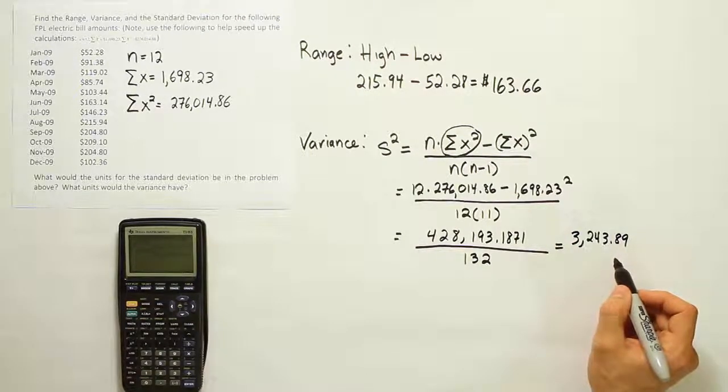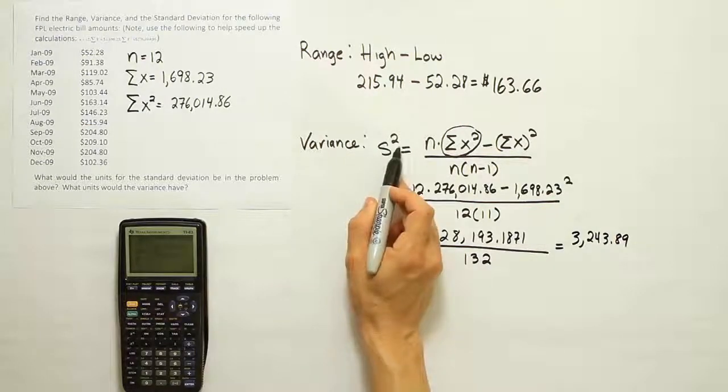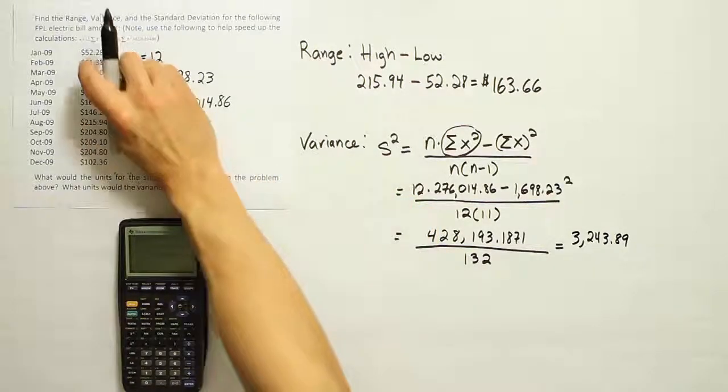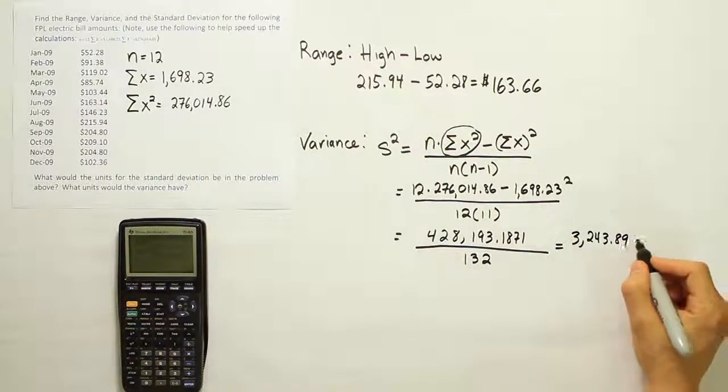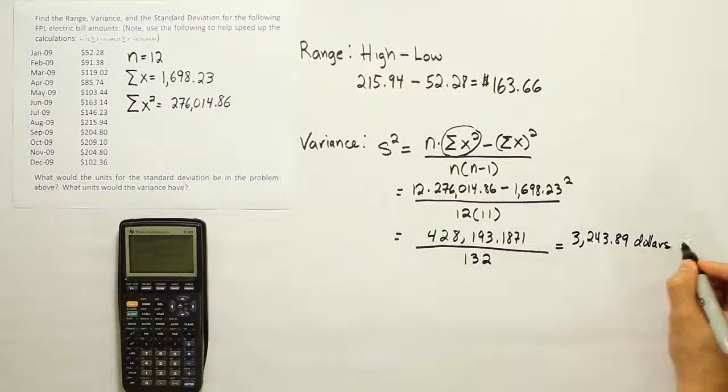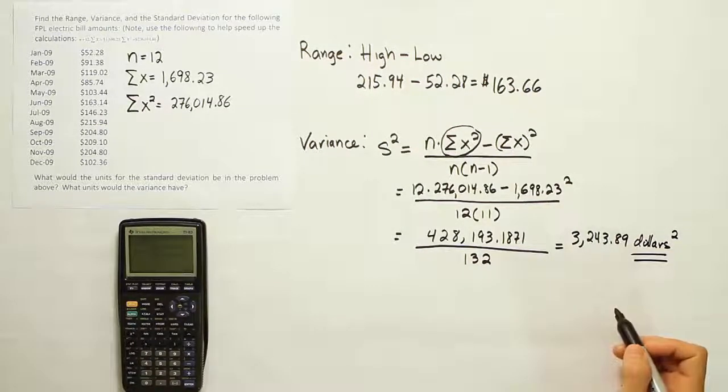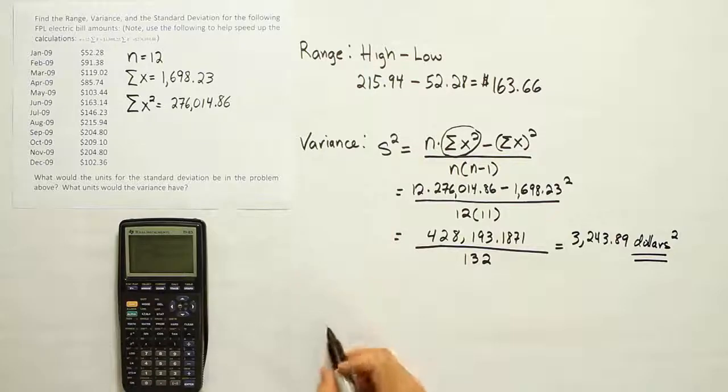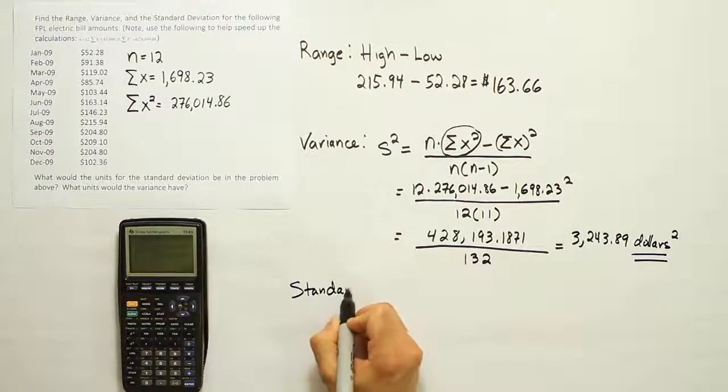Let's talk about the units now for this calculation. The variance always has squared units. So if the data originally started out in dollars, like it is here, then this is going to be dollars squared. So what's a dollar squared, right? That's a very strange unit. That's one of the reasons why we prefer instead to use the standard deviation. So let's look at that next, the standard deviation.